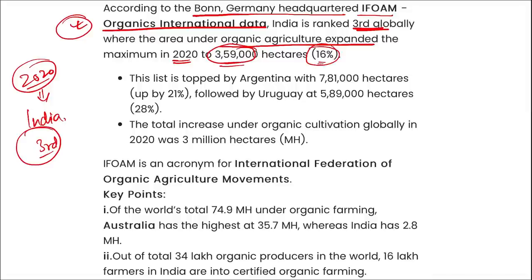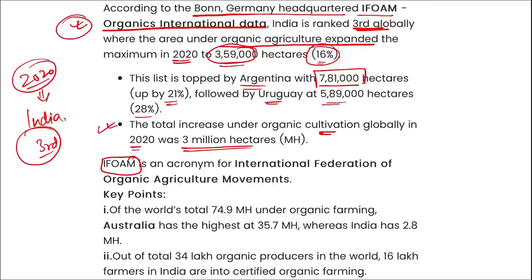This list is topped by Argentina with 781,000 hectares - up by 21% - followed by Uruguay with 589,000 hectares. The total increase in global organic cultivation in 2020 was almost 3 million hectares. IFOAM stands for International Federation of Organic Agriculture Movements.